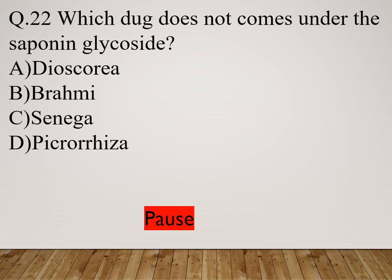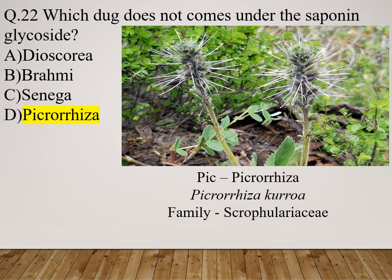Question 22: Which drug does not come under the saponin glycoside? Option A: Dioscorea. Option B: Brahmi. Option C: Senega. Option D: Picoriza. The right answer is Picoriza. Picoriza does not come under saponin glycoside; it comes under the bitter glycoside. The scientific name of Picoriza is Picrorhiza kurroa, belonging to family Scrophulariaceae.